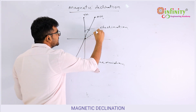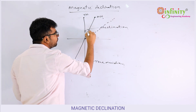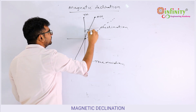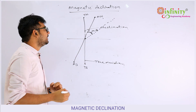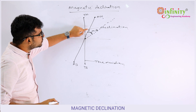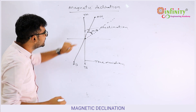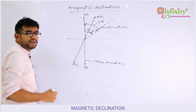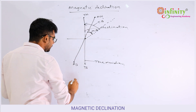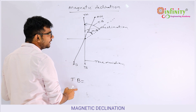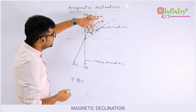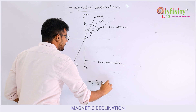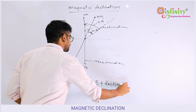Suppose this is the line I have. In the field, what I have measured is the magnetic bearing, and this is the declination. So once you know the magnetic bearing and the declination, you can calculate the true bearing of the line. From this diagram, true bearing equals magnetic bearing plus declination.